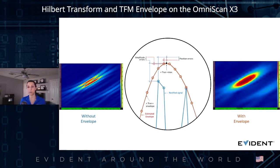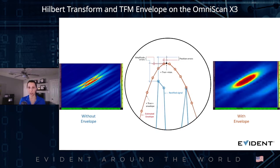The position of the peak will also be more accurate for the same reasons. The doubling oscillations of a standard TFM signal do not provide any relevant information about the defect or indication — they are simply due to the frequency characteristics of the probe, like the central frequency and the bandwidth, and not caused by the defect itself. Applying the TFM envelope concentrates the indication analysis on only the relevant signal, making for better sizing of both position and amplitude.